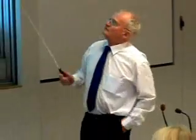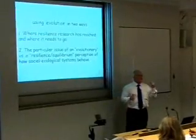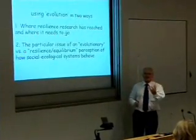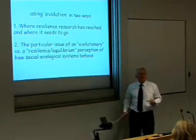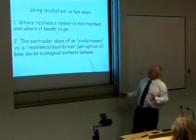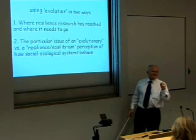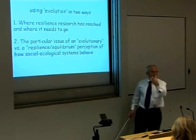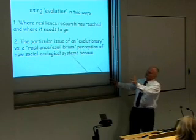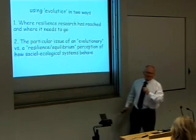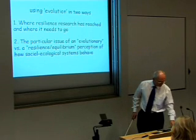I've used evolution in two ways in this talk. One, to talk about where the state of resilience science is now — how has it got to where it is, and where does it need to go? And secondly, the particular issue of the perspective of social-ecological systems as evolutionary systems versus, and I put this in inverted commas, a resilience equilibrium perception — and I'll come back to that. I think it's something we need to address.